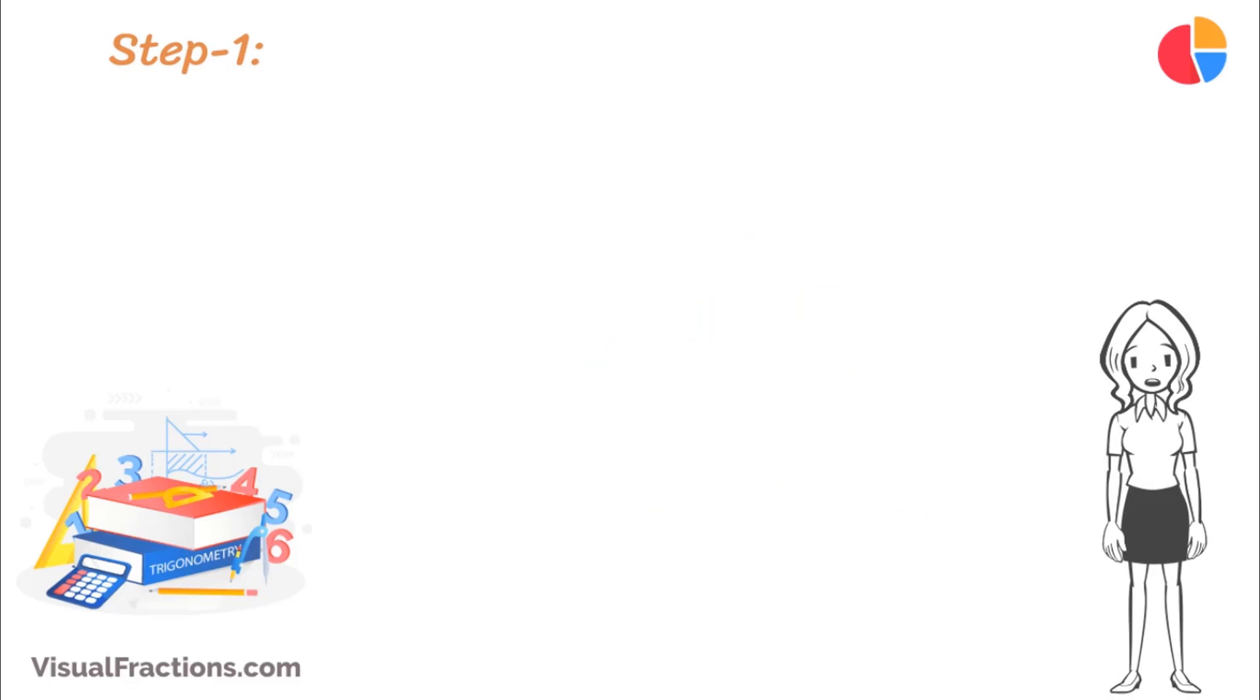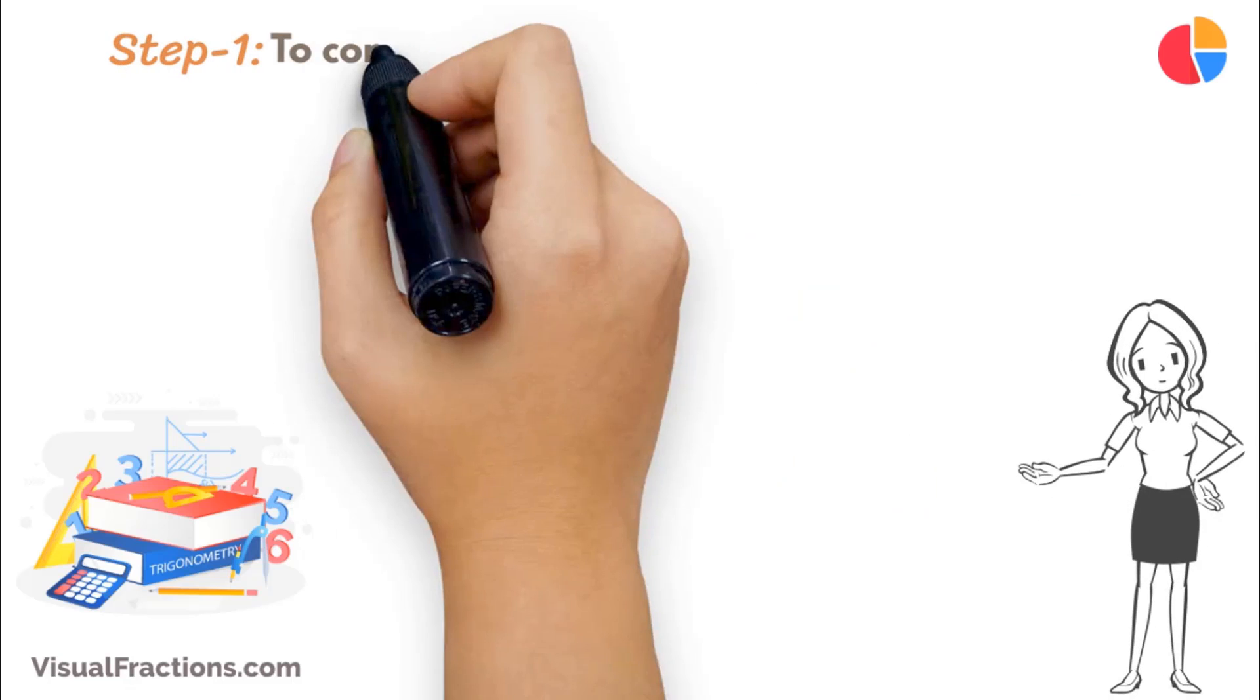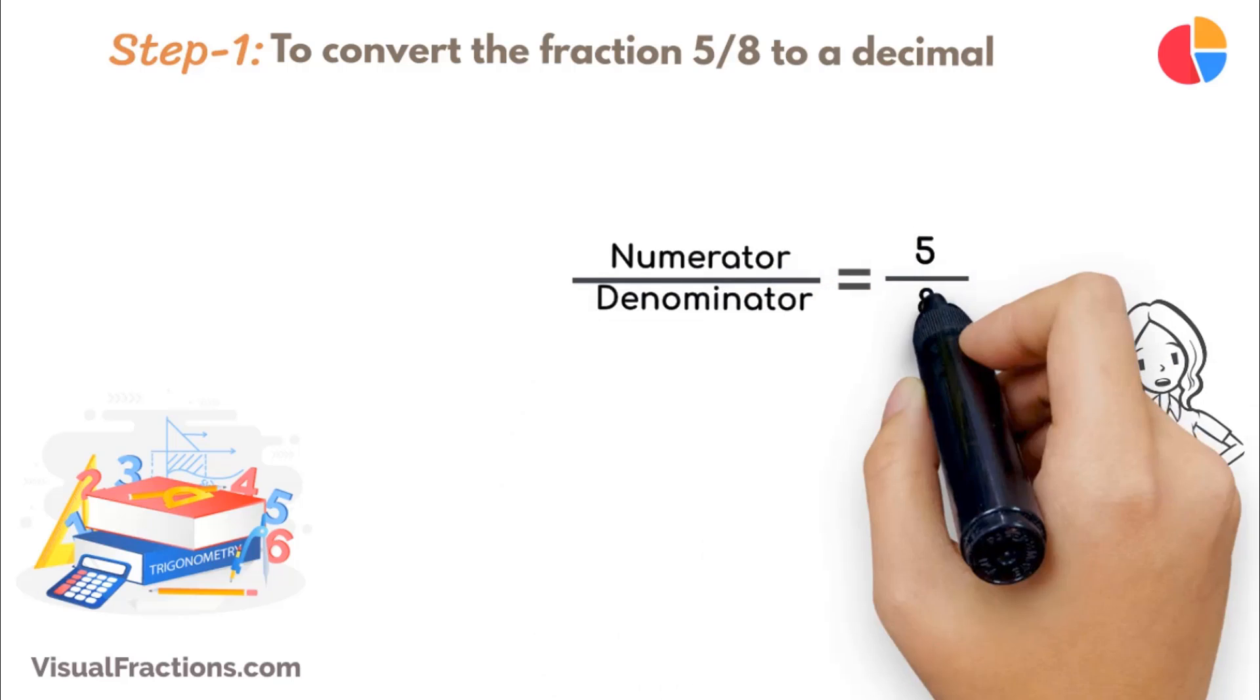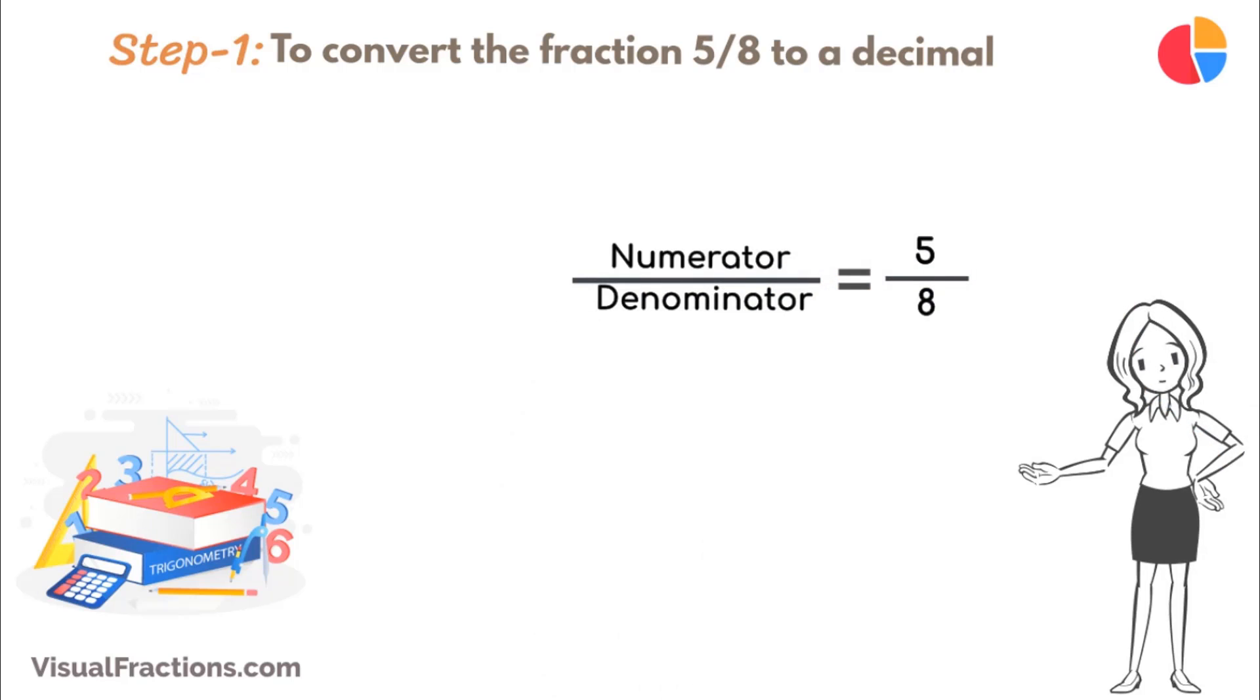The first step in converting the fraction 5 eighths to a percent is to convert this fraction to a decimal. We do this by dividing the numerator, the top number, which is 5, by the denominator, the bottom number, which is 8. Using a calculator, the answer we get is 0.625.